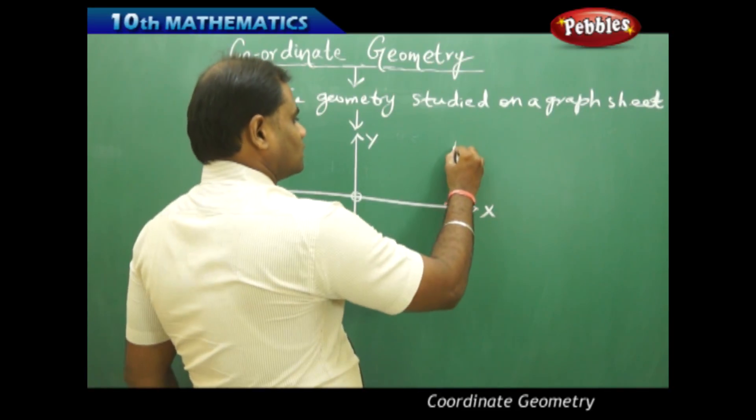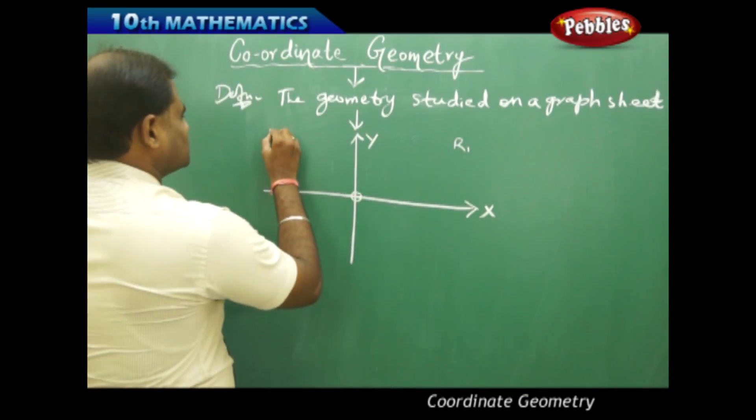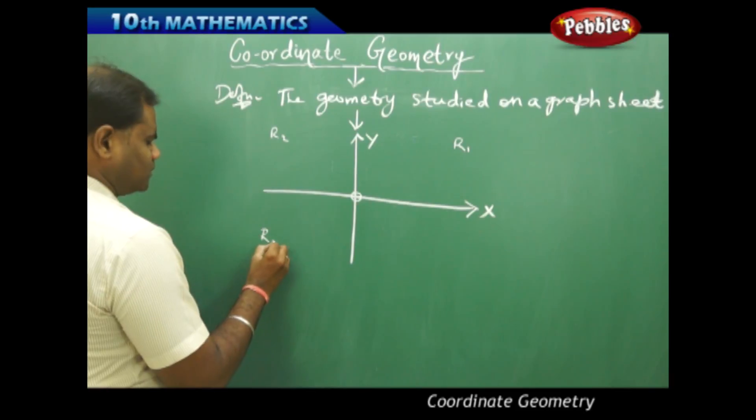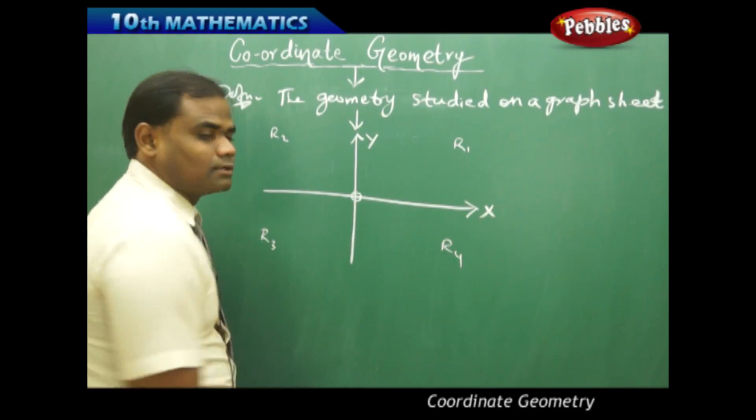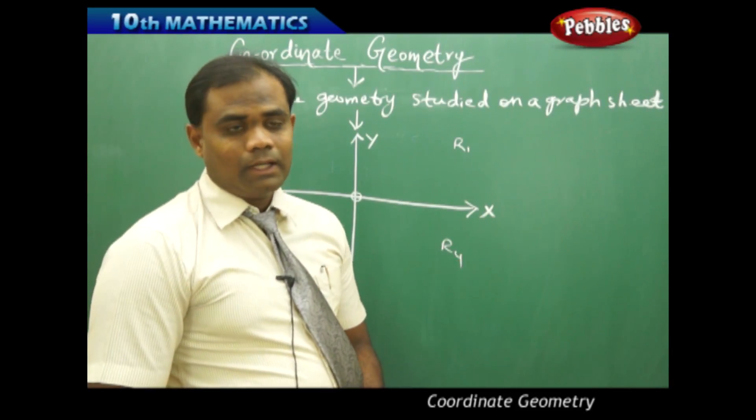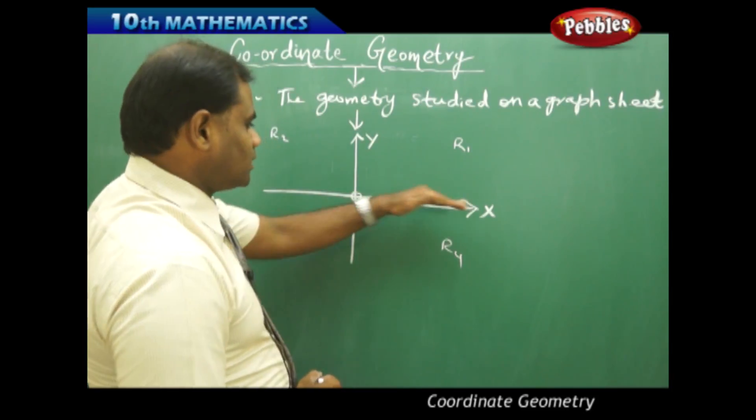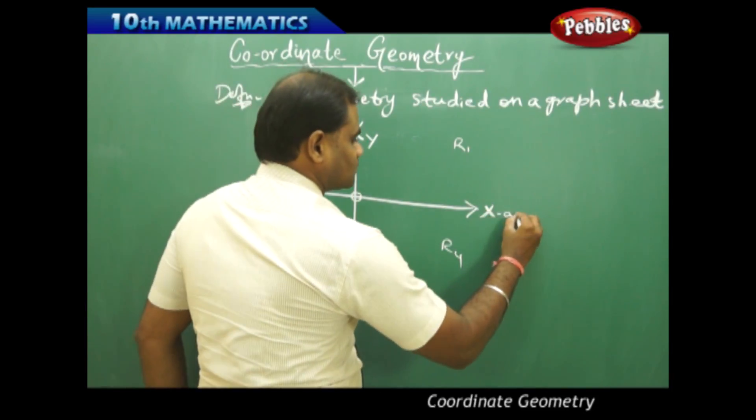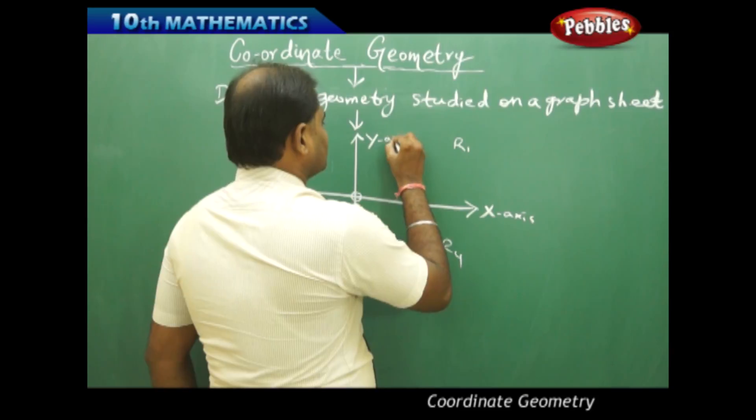This is region 1, this is region 2, region 3 and region 4. This is called X axis and this is called Y axis.